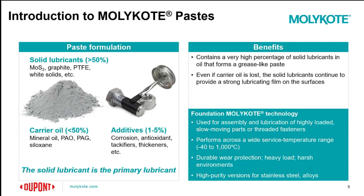The solid lubricant, being the majority of the composition, lends a thick, almost grease-like texture to the overall material. Over time in a given friction regime, the carrier oil could eventually evaporate and slowly wear away, and the solid lubricant is what's left to provide a strong lubricating film that is generally more tacky in consistency between the surface interfaces. Pastes are often used as an anti-seize for threaded fasteners and threaded components, and can also be used for the assembly and lubrication of applications with high loads and slow speeds. Our portfolio includes paste that can operate within a wide temperature range, from negative 40 degrees Celsius to 1,000 degrees Celsius.